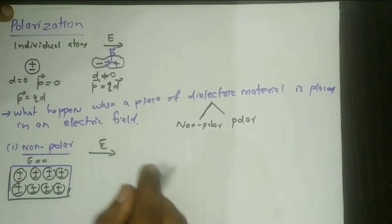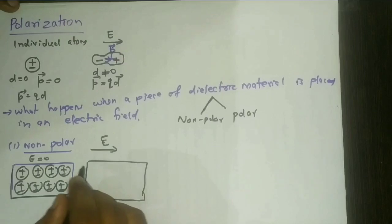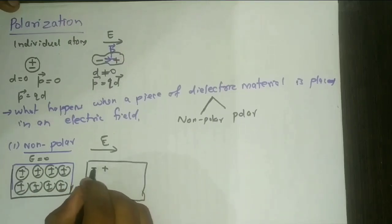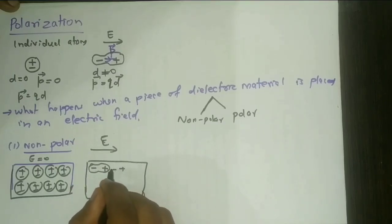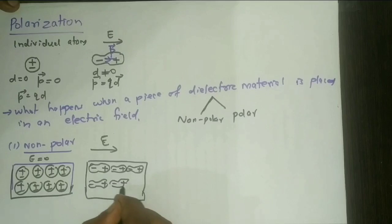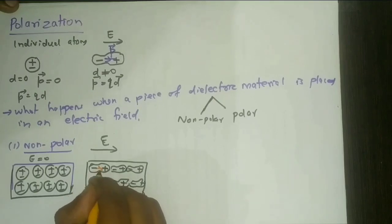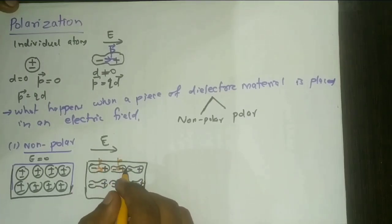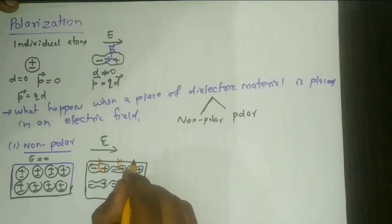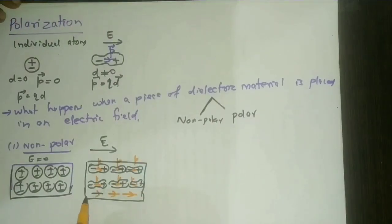This non-polar dielectric material consists of atoms having a zero dipole moment in the absence of the electric field. If we apply an electric field to this non-polar dielectric material, the positive charges displace slightly along the direction of the applied electric field and negative charges move in the opposite direction. The field will induce tiny dipoles pointing in the same direction of the applied electric field.